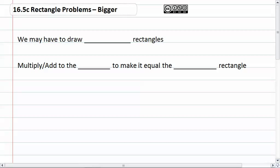16.5c Rectangle Problems Bigger. We may have to draw two rectangles. We multiply or add to the small rectangle to make it equal the big rectangle.